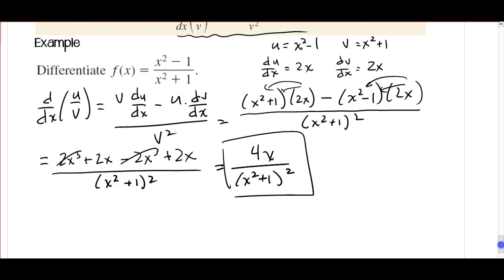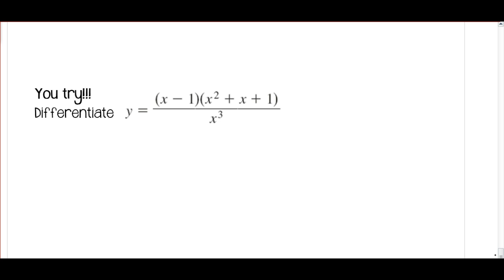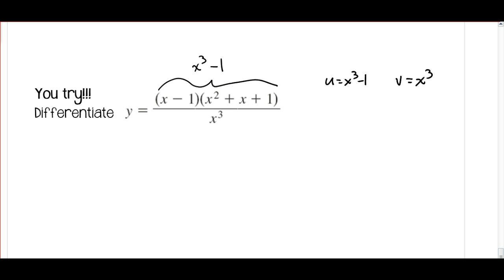So for the you try over here, what I would recommend to start out is, if you recognize this, this is a cubed minus b cubed. So if we multiply this back out, we're going to end up with x cubed minus 1. So I would recommend doing that first. So then your u is going to be x cubed minus 1. And your v is going to be x cubed. So if you want to go ahead and try the rest of it on your own, go ahead and pause the video. Otherwise, when you restart, the solution will be there waiting for you.